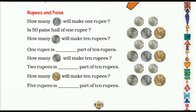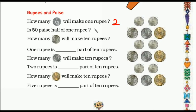Now the topic is Rupees and Paise. How many fifty paise will make one rupee? Two fifty paise will make one rupee. Is fifty paise half of one rupee? Yes, fifty paise is half of one rupee.